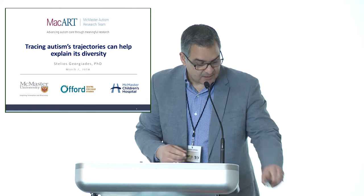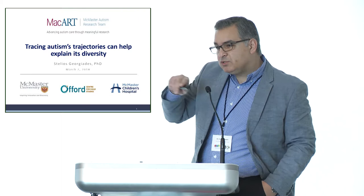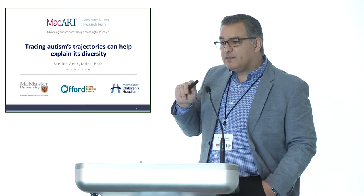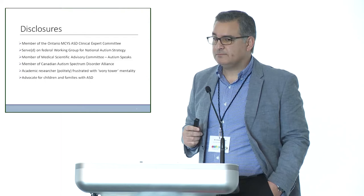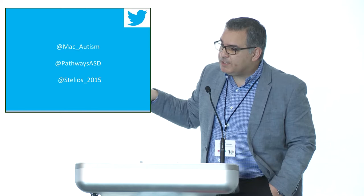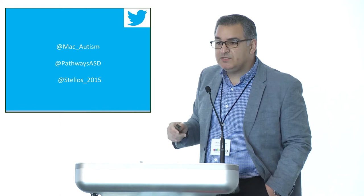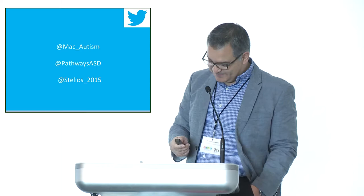So tracing autism trajectories can help explain its diversity. I'm going to talk a little bit, and I'm also going to show you three very brief videos, because I know that after a few minutes, you're probably going to get tired listening to my voice. Some disclosures to set the stage. If you do get bored and you go on Twitter, these are some of the Twitter handles that we use. The first one is for the McMaster Autism Research Team. The second one is for the Pathways in ASD study that I'm going to be describing today. And the last one is my personal — hoping I will get at least five new followers today.